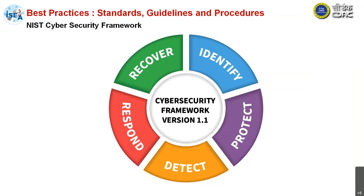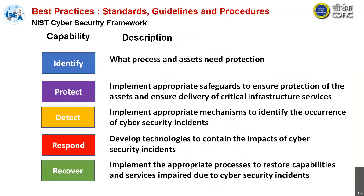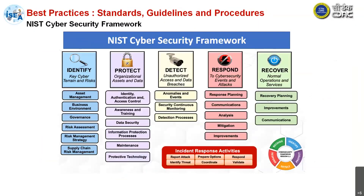The NIST Cybersecurity Framework starts with five components: identify — what processes and assets need protection; protect — implement appropriate safeguards to ensure protection of assets and delivery of critical infrastructure and services; detect — implement appropriate mechanisms to identify the occurrence of incidents; respond — develop and implement activities to contain the impact of incidents; and recover — implement appropriate processes to restore capabilities and services impaired due to cyber crisis incidents.